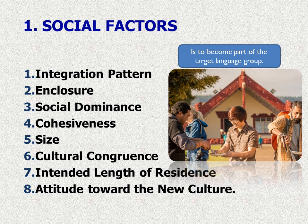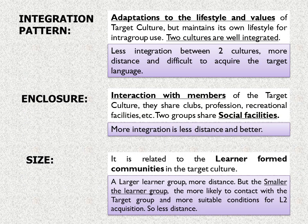The first social factor is integration pattern. It means adaptations to the lifestyle and values of the target culture — the two cultures must be well integrated. Less integration between two cultures means more distance and difficulty acquiring the target language. The second factor is enclosure, which means interaction with members of the target culture — for example, sharing interaction in clubs, professional, and recreational facilities. More integration means less distance and better conditions to learn.